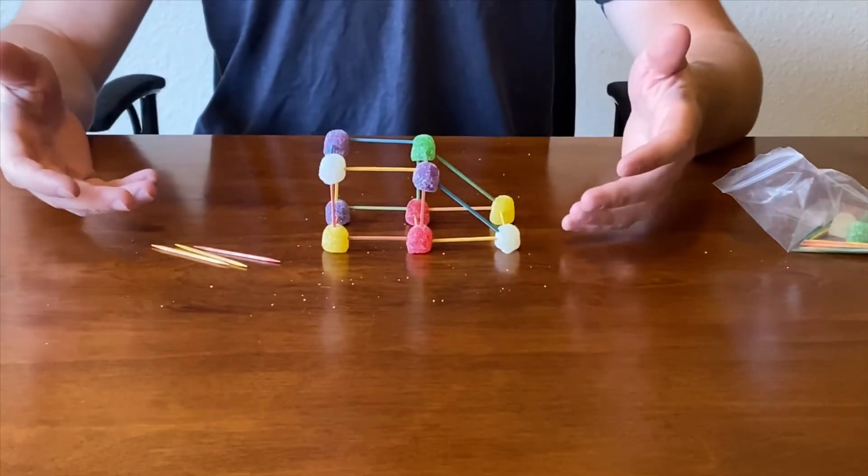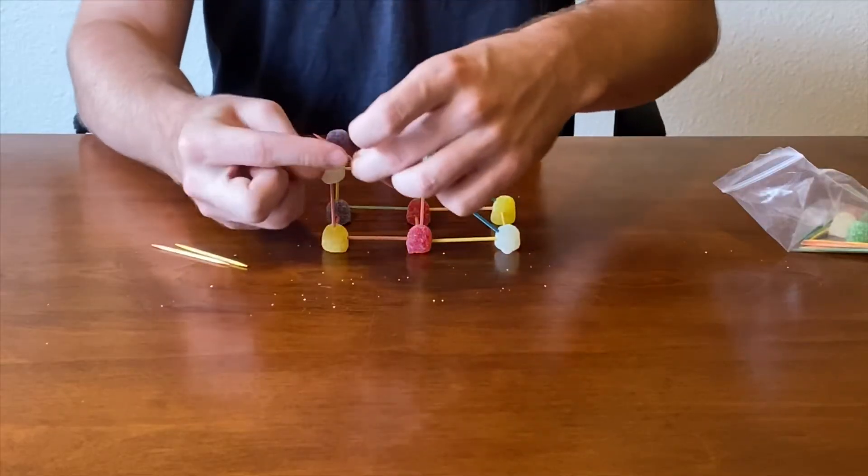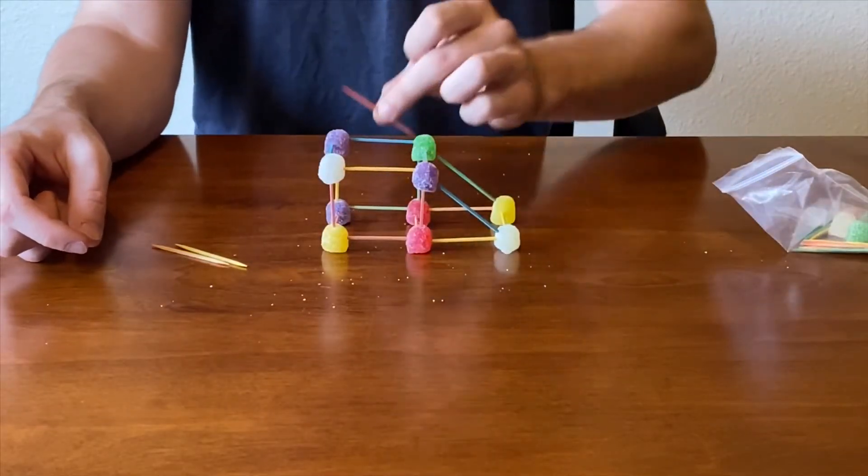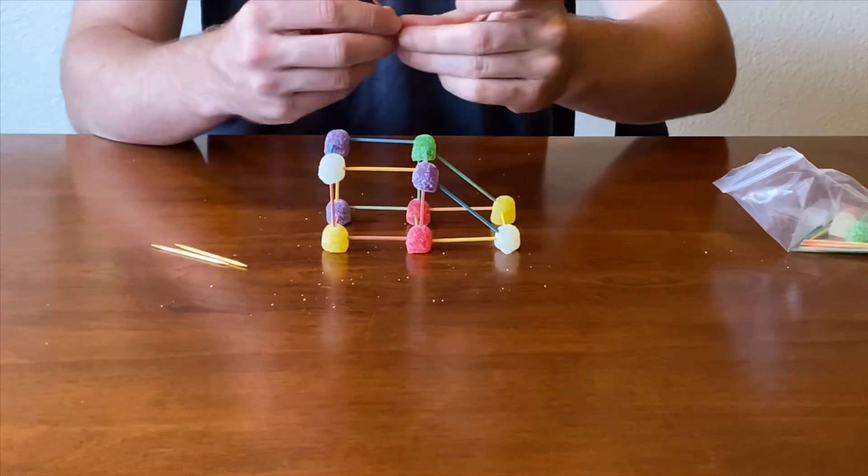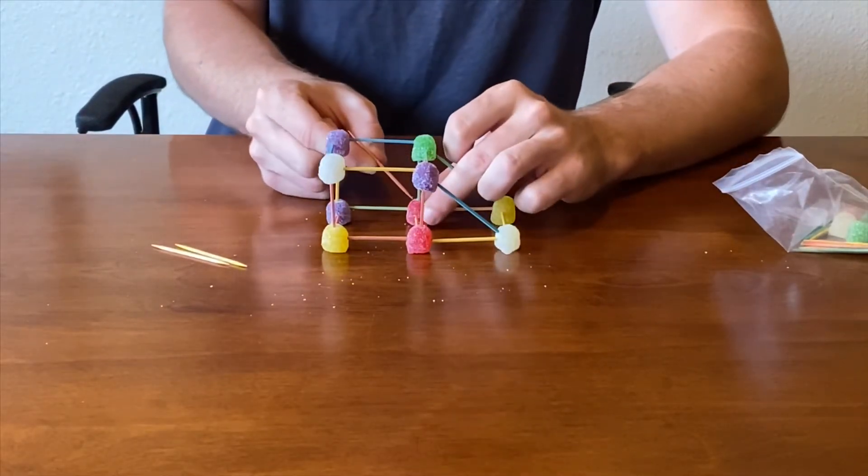Now that we have half of our bridge basically done, we need to add just a few cross sections right here and then right here, just to give it a little more stability and have more of that bridge look. So let's go ahead and do that.